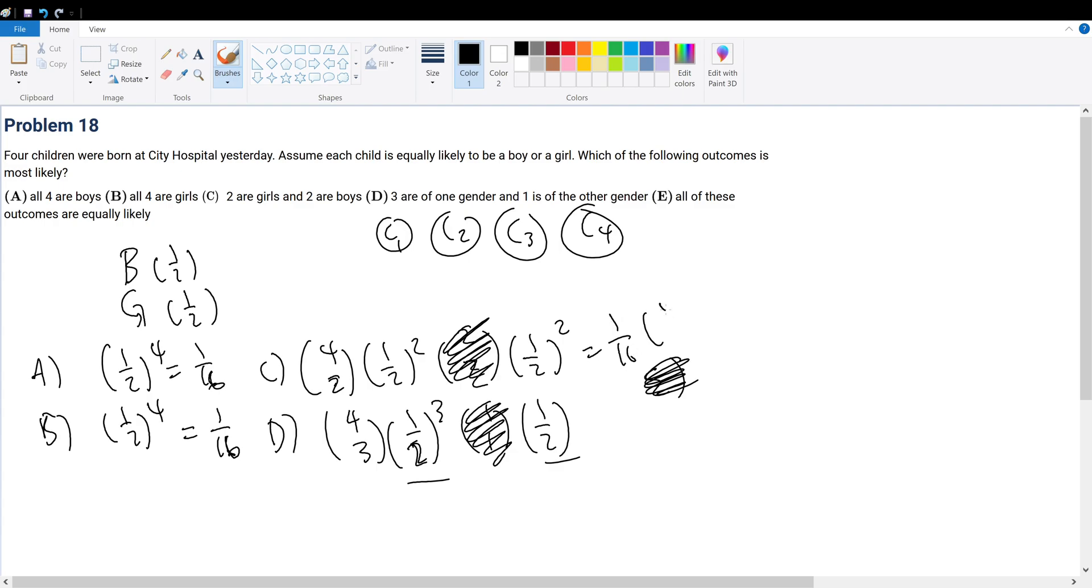1 over 16, 4 pick 2. And this is 1 over 16, 4 pick 3. This is, same thing, well, this is 4 over 16, which is 1 over 4.